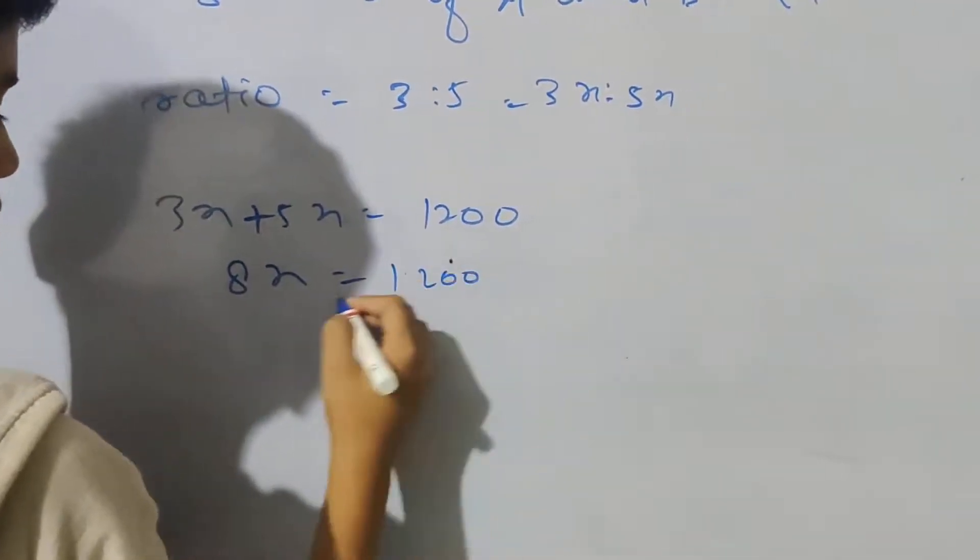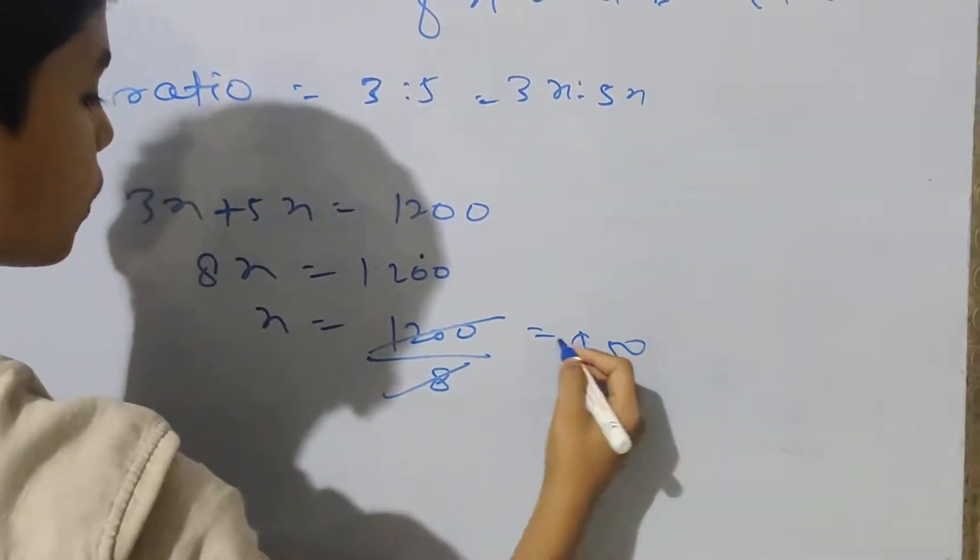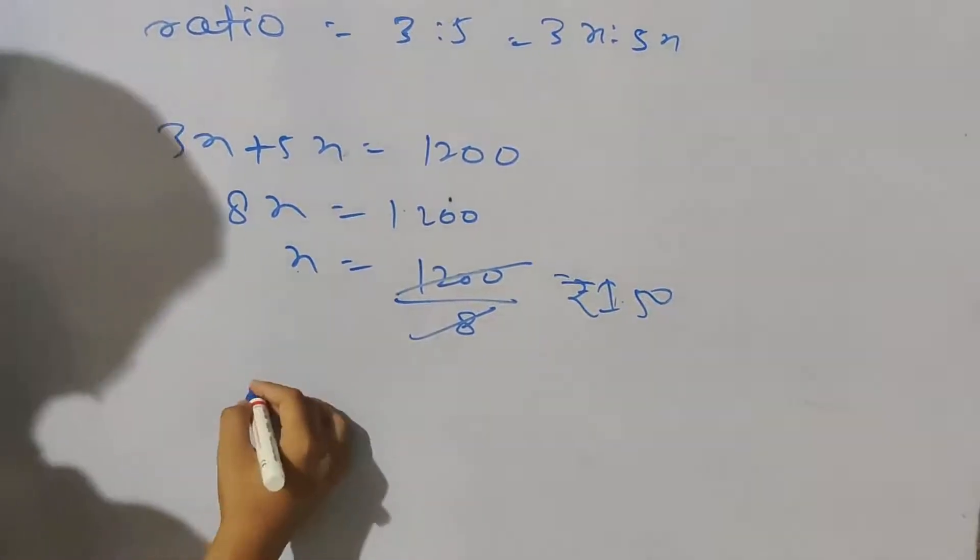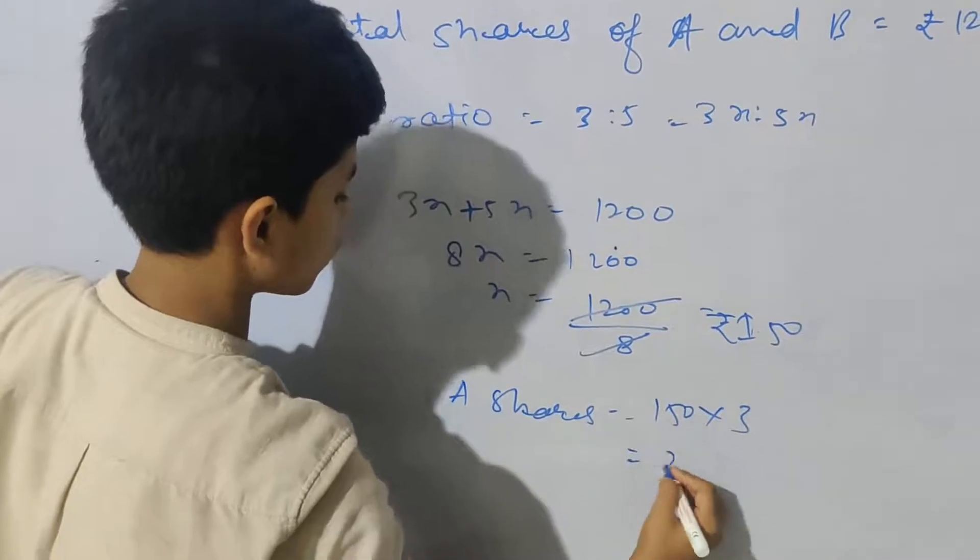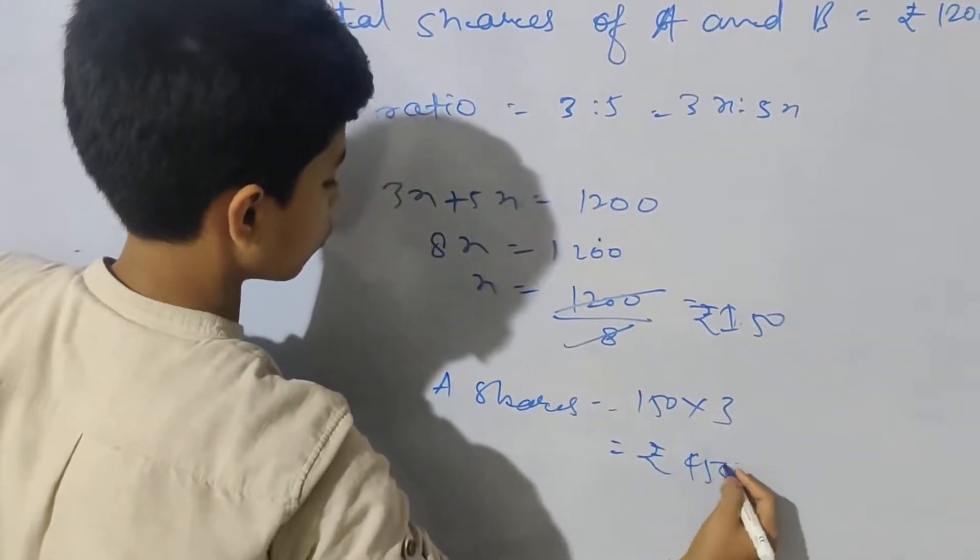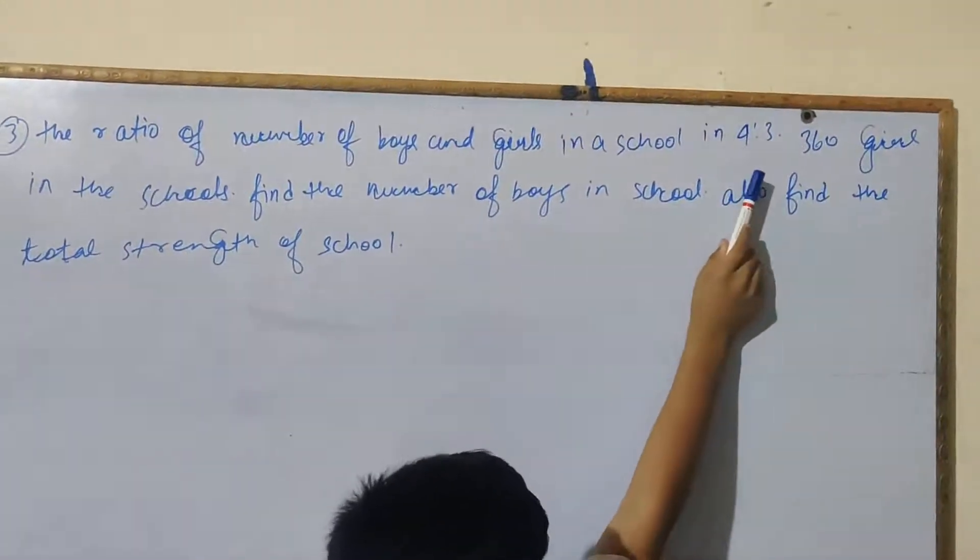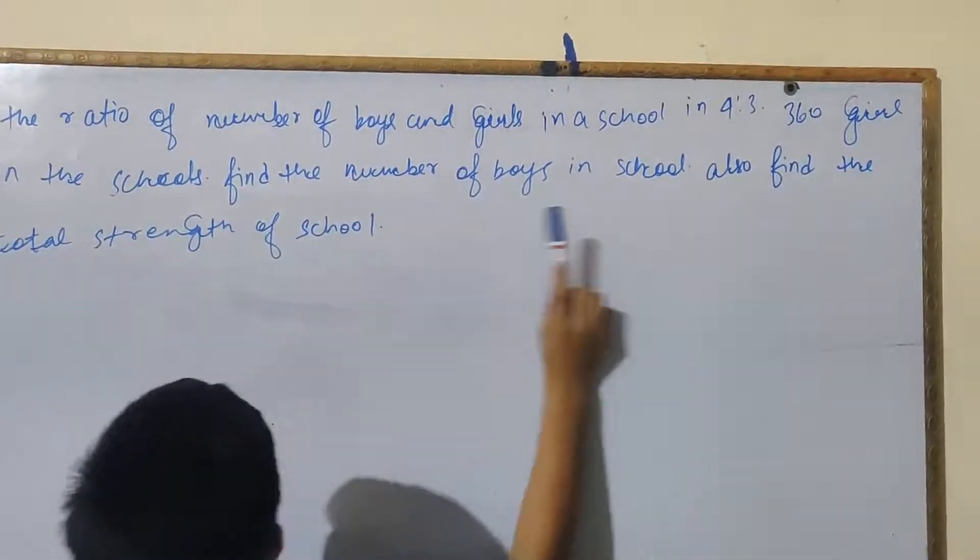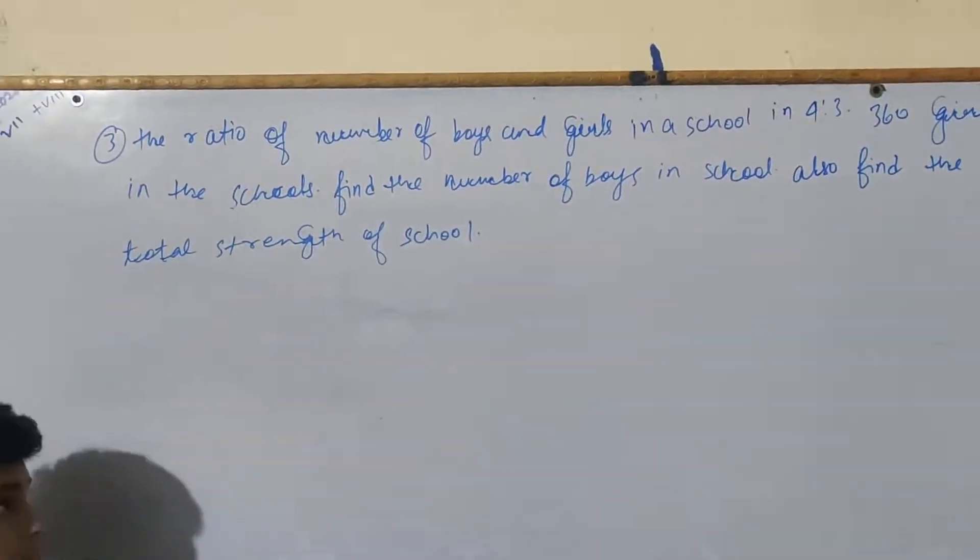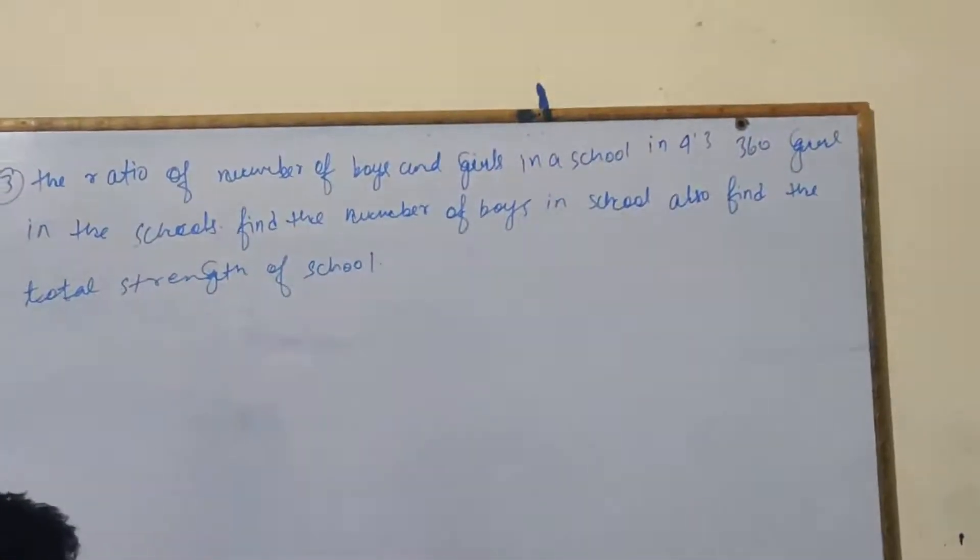Total shares of A and B is 1200 rupees. A and B's ratio is 3:5, that is 3X:5X. So 3X plus 5X equals 1200. 8X equals 1200, so 1200 divided by 8 equals 150. A's share is 3 times 150, which equals 450 rupees.